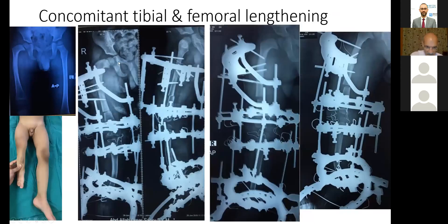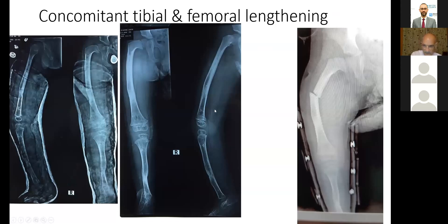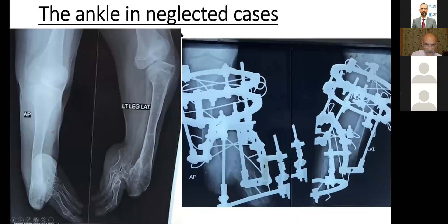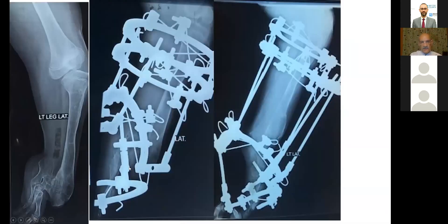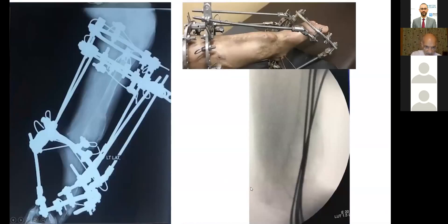In some cases we perform tibial and femoral lengthening. This is also relevant for congenital short femur. For the ankle in neglected cases — for example, this neglected case with a dislocated ankle — we put the frame on, then perform gradual displacement of the foot, correct the deformity, and during the operation we put multiple wires.